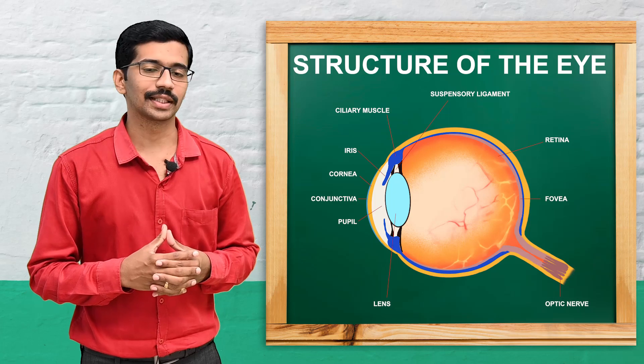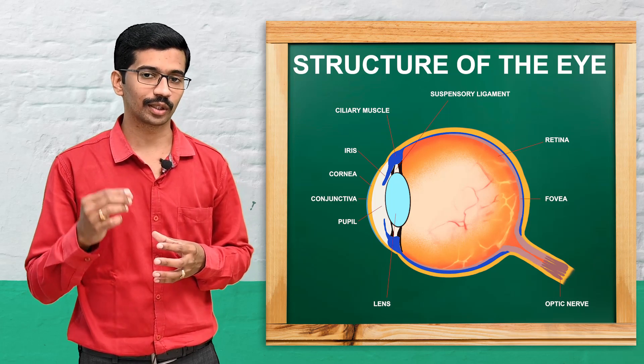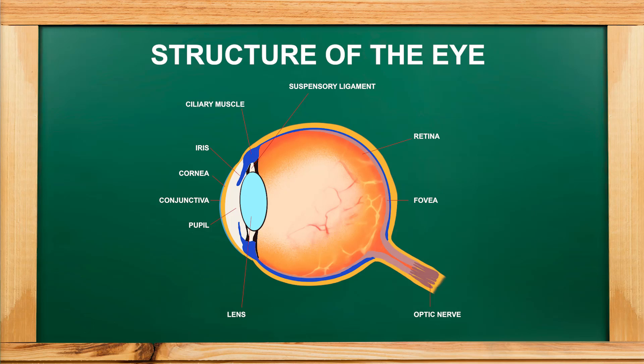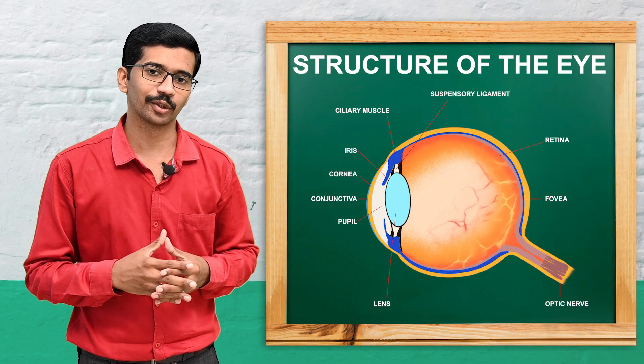The eye is an important organ of sight which is located in the orbital cavity of the skull. The diameter of the eyeball is approximately 24 millimeters or 2.4 centimeters. The eye is broadly divided into two segments: one is the anterior segment and another is the posterior segment. The anterior segment is approximately 1/6th of the eyeball and the posterior segment is 5/6th of the eyeball.